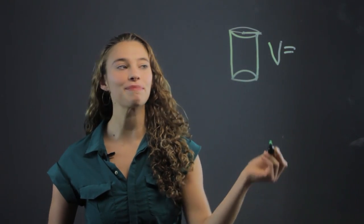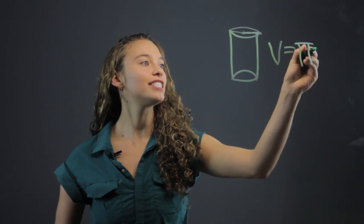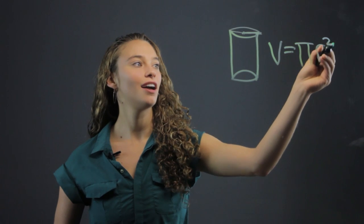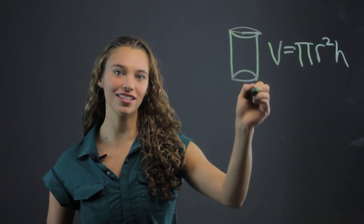And of course you need to memorize the formula. The volume is just the area of the circle multiplied by the height of the cylinder.